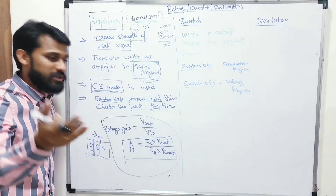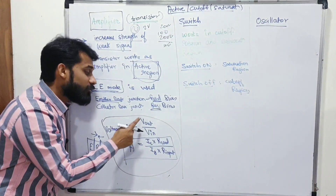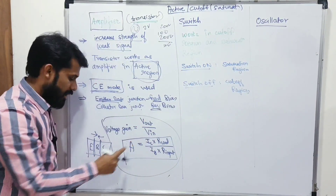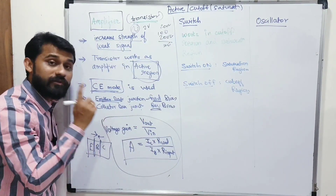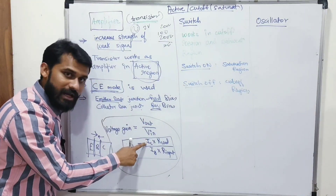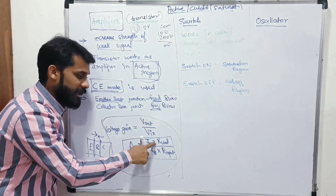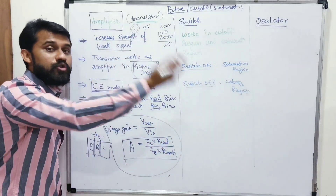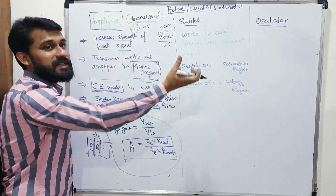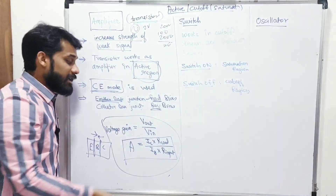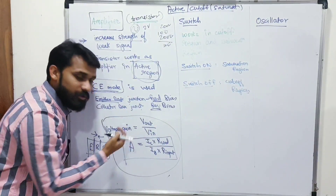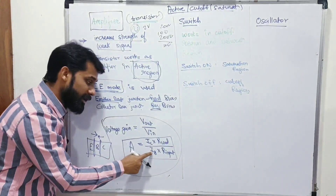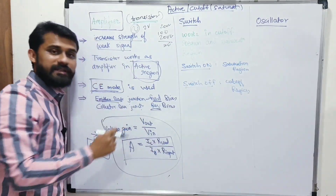Using Ohm's law: output voltage = IC × RL (load resistance), and input voltage = IB × Ri (input resistance). So gain = (IC × RL) / (IB × Ri). Since IC/IB = beta, the voltage gain formula simplifies to: Gain = beta × RL / Ri. This is the voltage gain formula for a transistor amplifier.